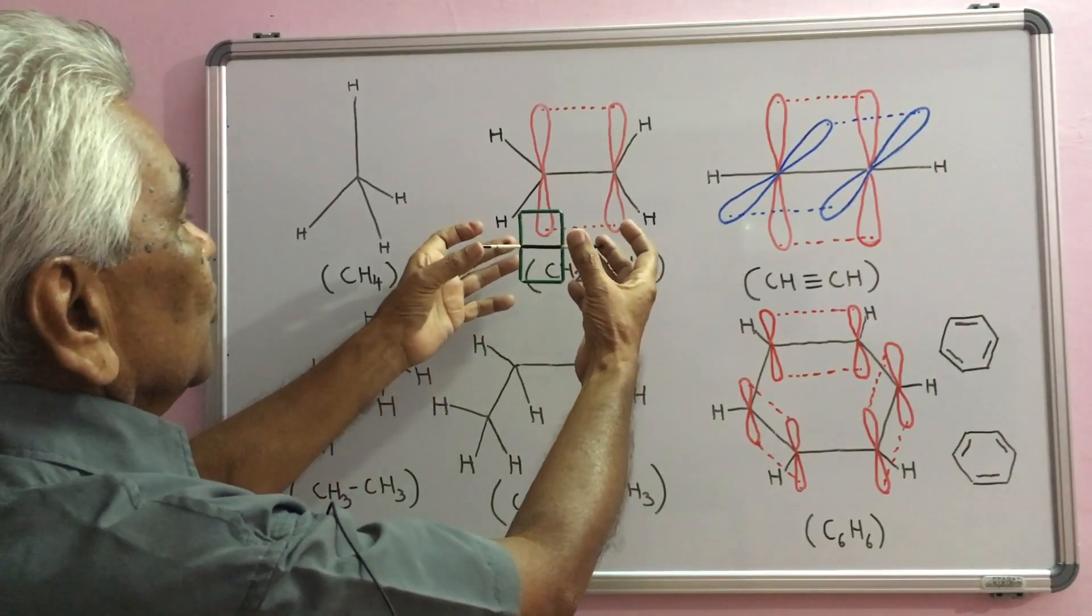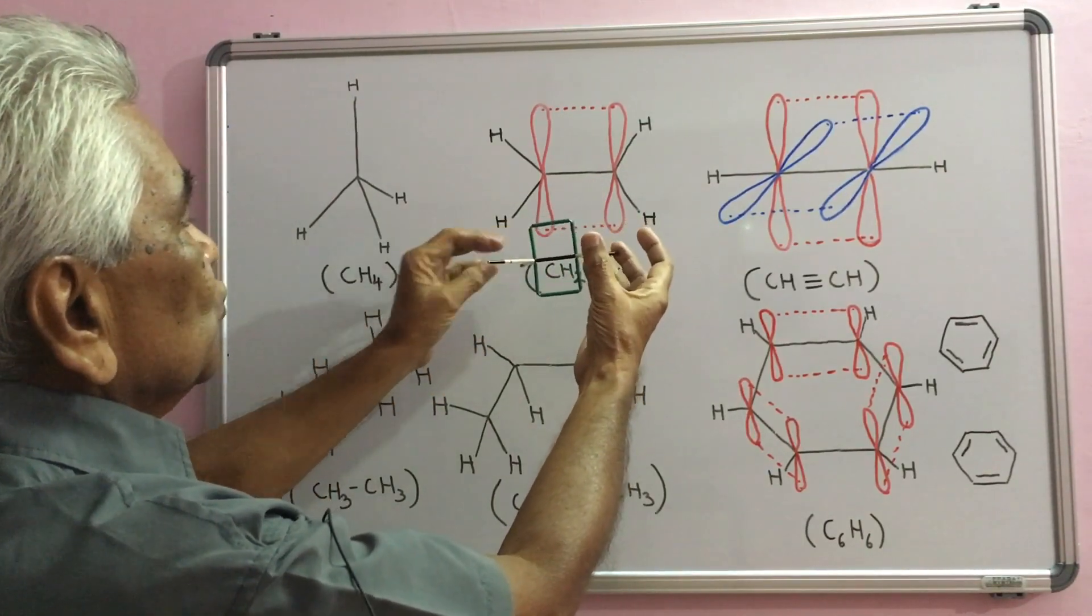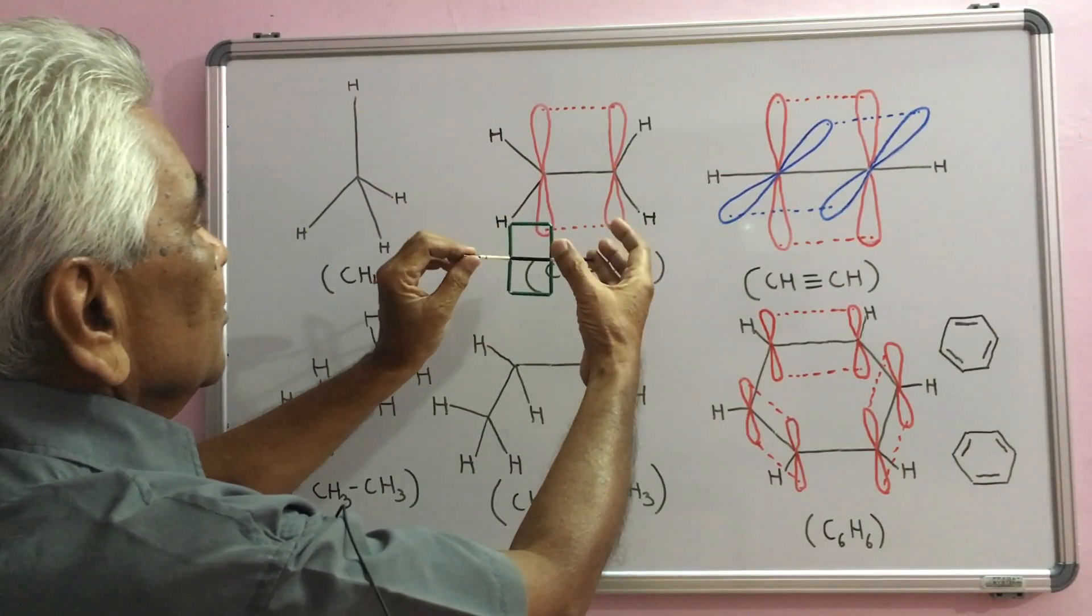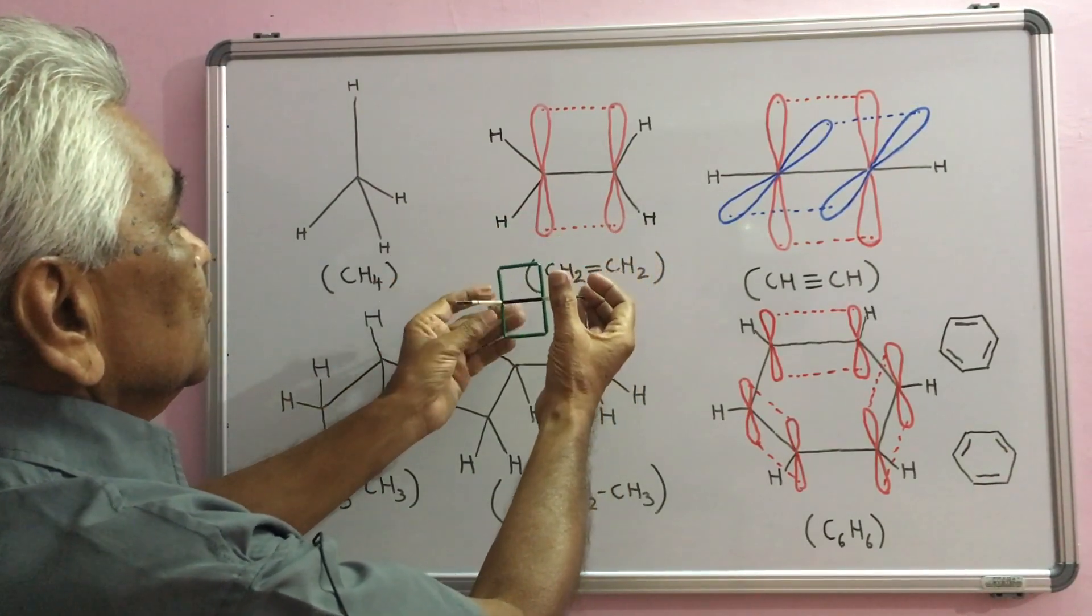These four CH bonds are formed by sp2-s overlaps. They are all in the same plane.